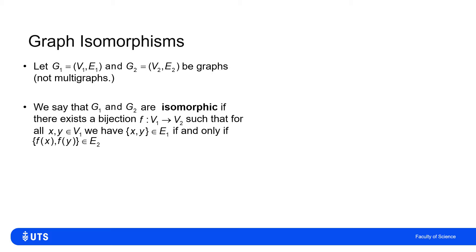We would call these two graphs isomorphic if and only if there is a bijection mapping V1 to V2, such that the edge X, Y is in E1 if and only if there's a corresponding F of X, F of Y, which is an edge in E2.